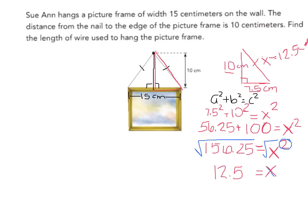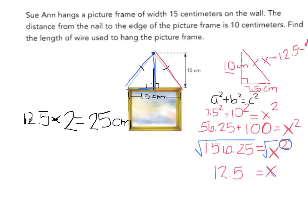But I'm not done yet because this only gives me the piece that was in red, and I also have this other part of the triangle. And since these two triangles here have to be congruent triangles, I know that this side is equal to this side. So I'm going to take my 12.5 and I'm going to multiply it by 2, which equals 25 centimeters. So the length of the wire is 25 centimeters.